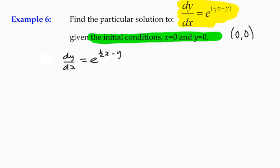We're going to solve it in the best way that we can. We need to separate the variables. We've got a sum of indices here, so we can split that up into a product of two terms: dy/dx is equal to e to the power of the half x multiplied by e to the power negative y.